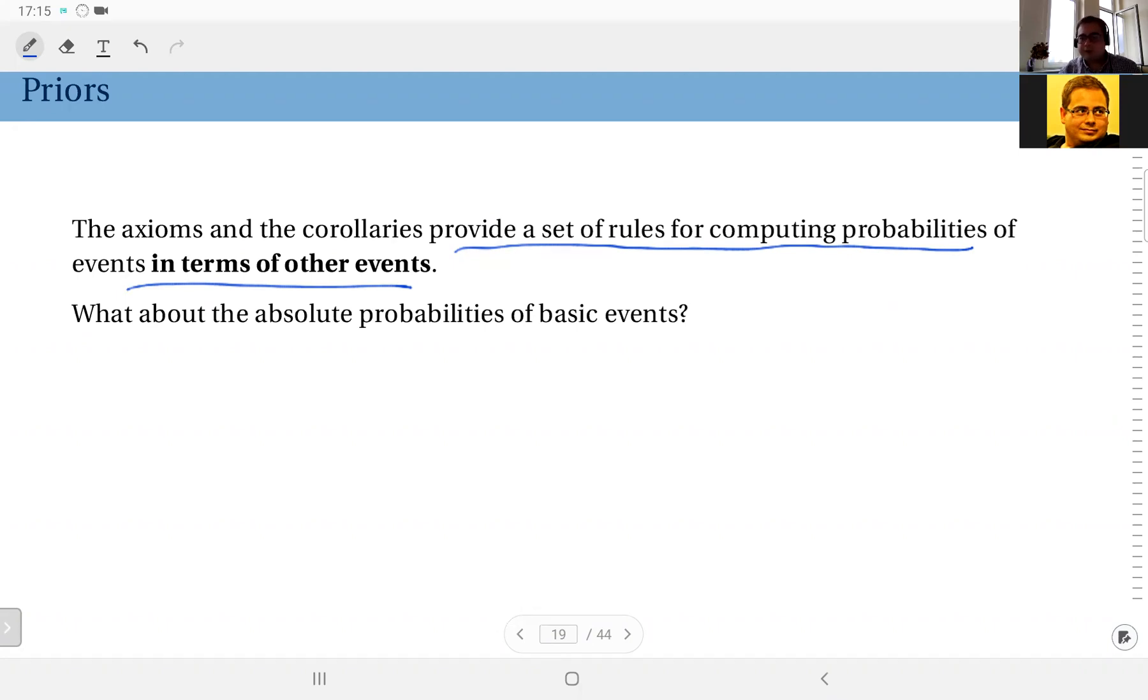But the question is, how do I know the probability of A or how do I know the probability of B? What about the absolute probabilities of basic events, elementary events in your sample space? These we will call the priors or a priori probabilities.